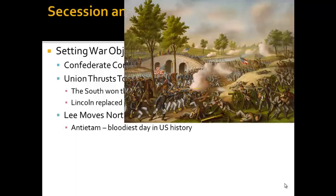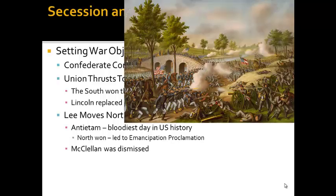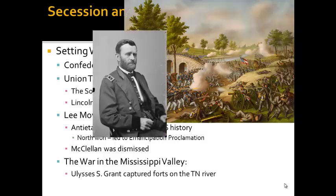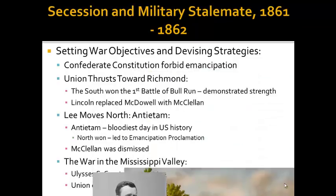The Battle of Antietam is a very important battle to know. It's the bloodiest day in U.S. history. The North won, although it had many casualties, and this led to the issuance of the Emancipation Proclamation. McClellan was dismissed after this battle because Lincoln felt he did not follow through enough against the South. In the Mississippi Valley, Ulysses S. Grant became well known, capturing forts on the Tennessee River. The Union also captured the port city of New Orleans, which was a very important city for the South.